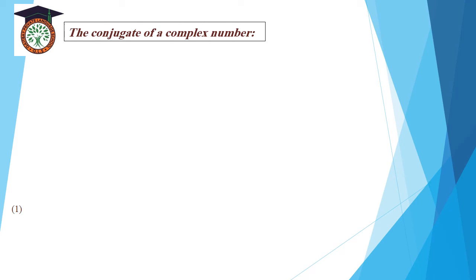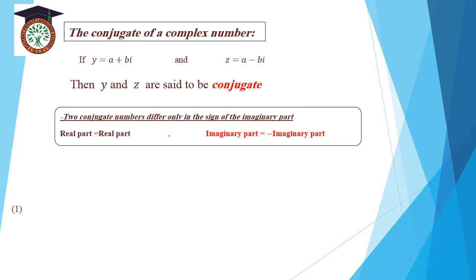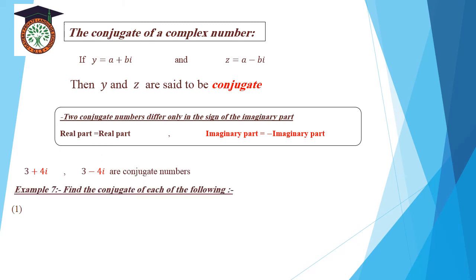The conjugate of a complex number. If Y equals a plus bi and Z equals a minus bi, then Y and Z are said to be conjugate. Two conjugate numbers differ only in the sign of the imaginary part. For example, 3 plus 4i and 3 minus 4i are conjugate; positive 4i and negative 4i are conjugate numbers.